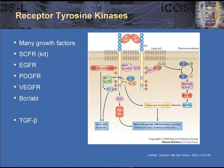In the case of a mast cell, as shown here through the stem cell factor receptor, mast cell activation can also result in degranulation of the cell. Growth factors are commonly associated with receptor tyrosine kinases — the KIT receptor, the EGF receptor, PDGF receptor, the VEGF receptor, and the BCR-ABL translocation in CML. The TGF-beta receptor is also a receptor tyrosine kinase; however, TGF signals through a different set of molecules that I won't discuss in this talk.